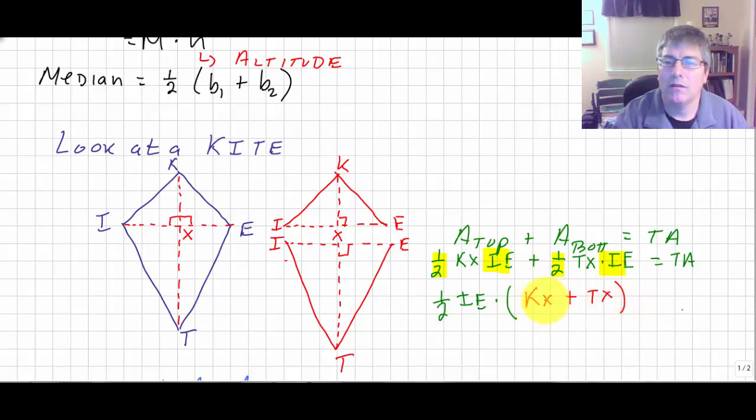Well, let's take a closer look at KX plus TX. KX plus TX—well, that is the entire length KT. So adding that together, I have one-half IE times KT.